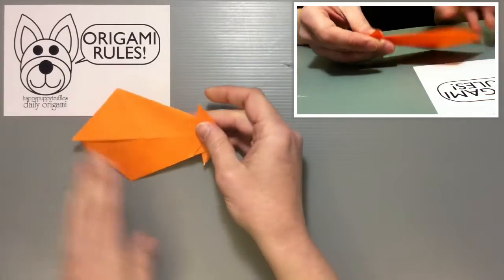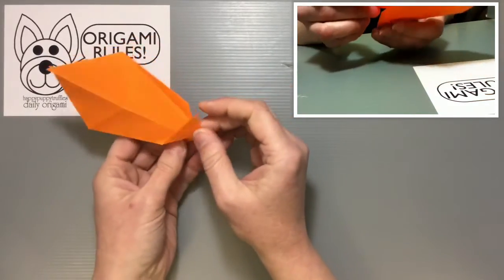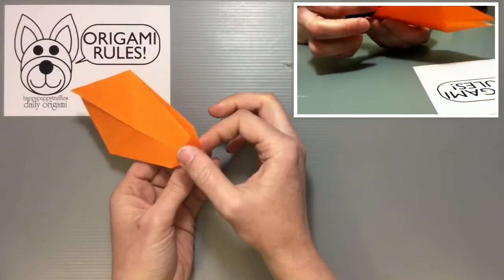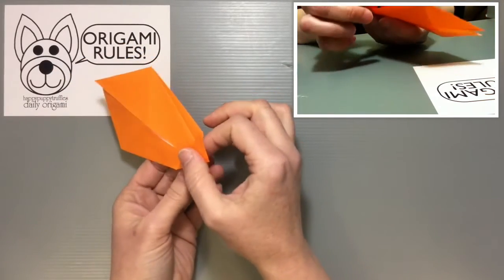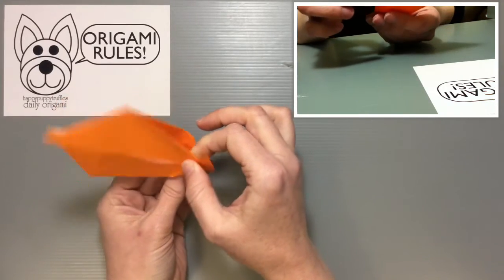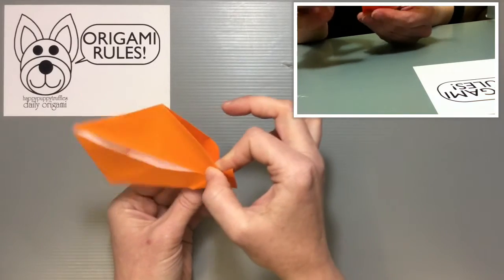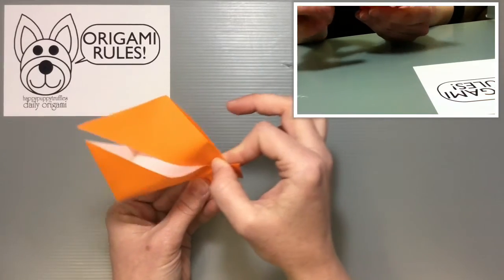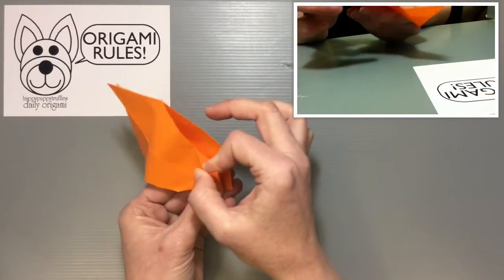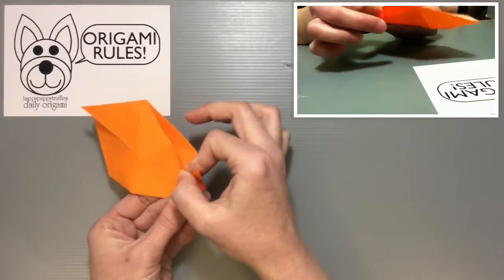And that's the completed talking fish. Now this is an action origami. So what we do is by taking hold of both of these fin tails here, if you wiggle them around right, you can see the mouth opening and closing a little bit. It kind of moves side to side, but it's still an action origami nonetheless.